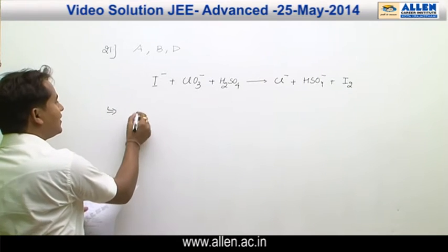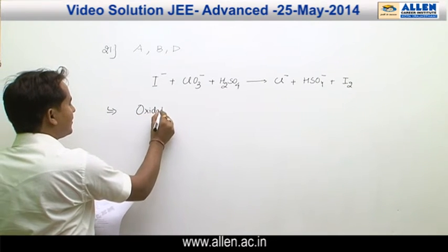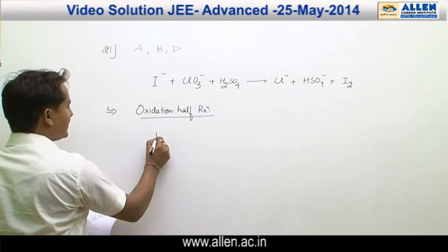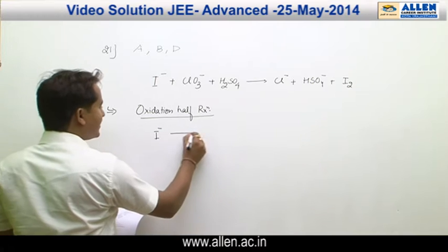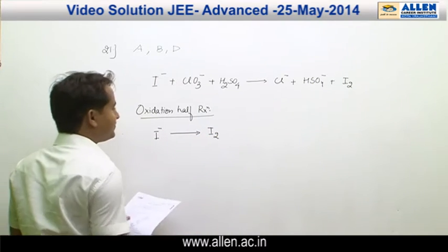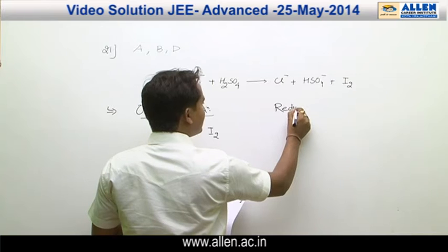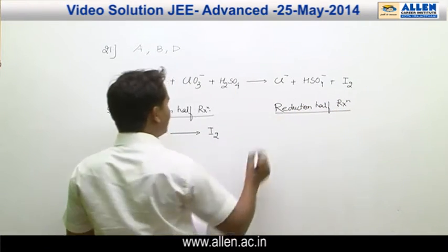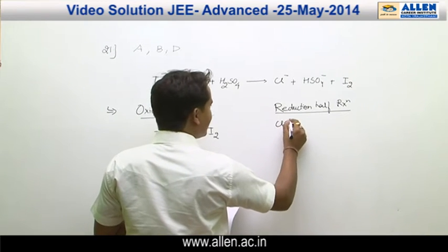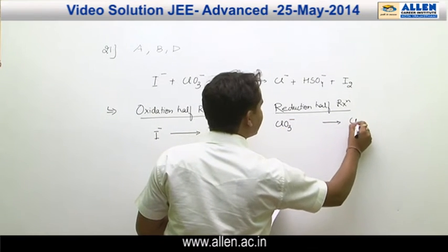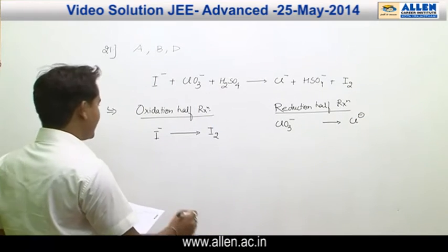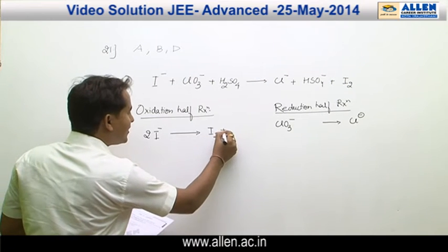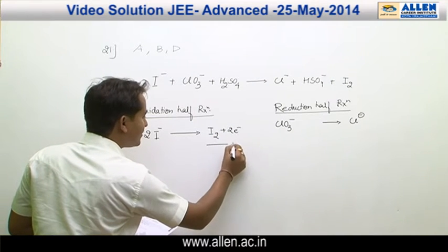Now, the oxidation half reaction of this equation is I⁻ is converted to I₂, and the reduction half reaction of this equation is ClO₃⁻ is converted to Cl⁻. To balance iodine, we have to multiply with 2 plus 2 electrons, equation 1.